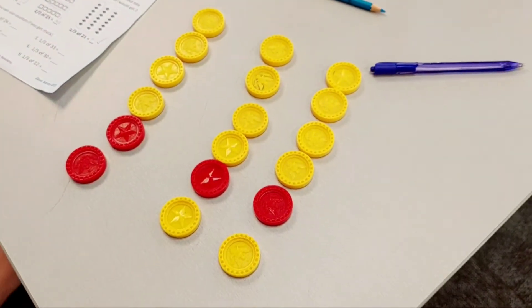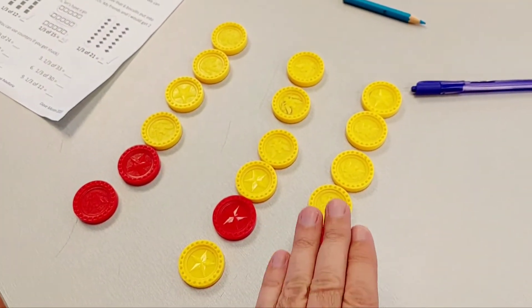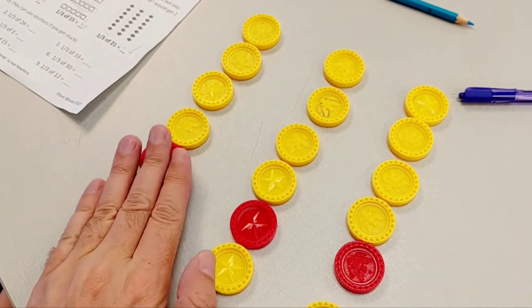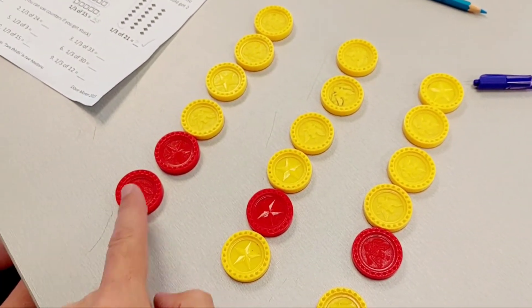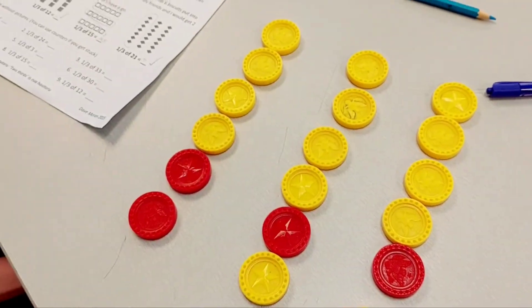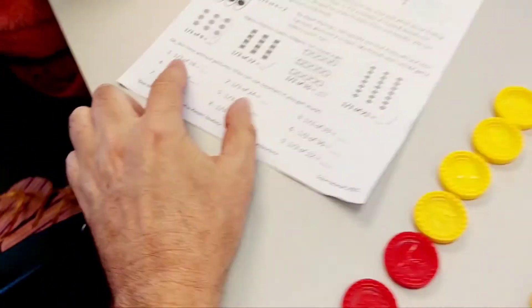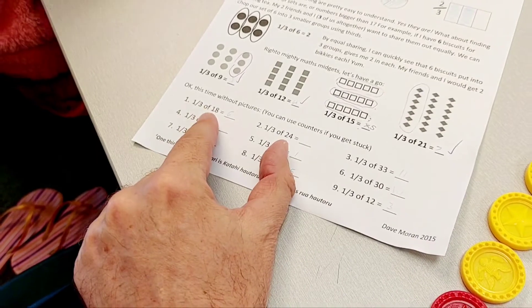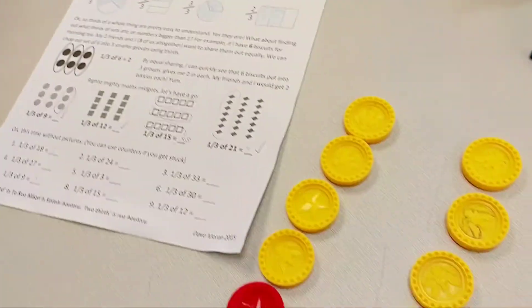From there, we can see how many are in each set. We can just really easily count those. So just count with me. One, two, three, four, five, six. So we know that one third of 18, the answer must be six. Perfect.